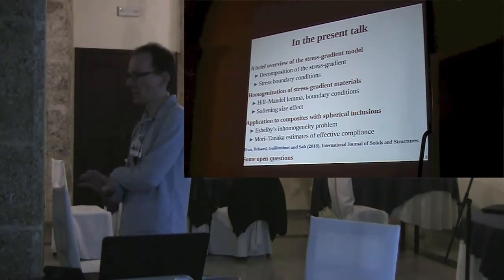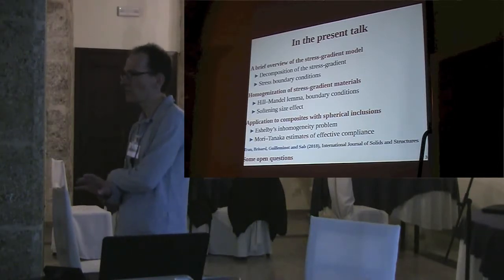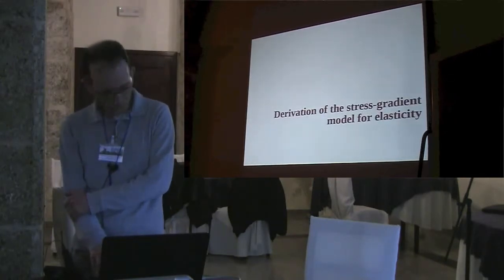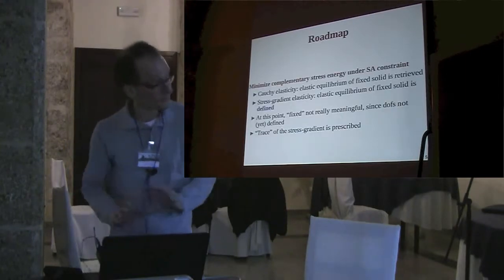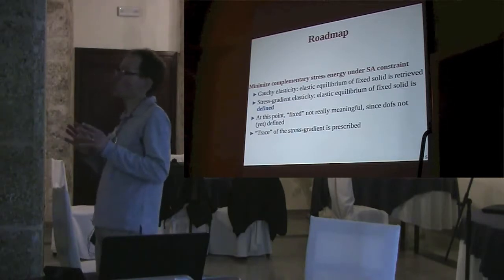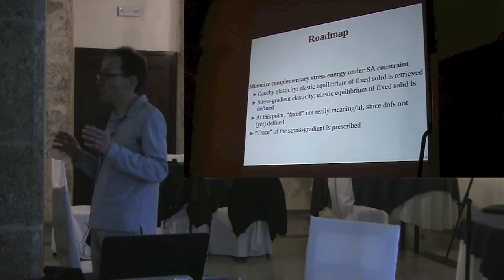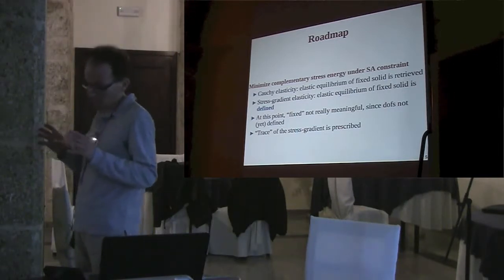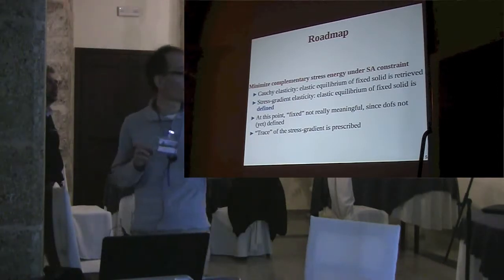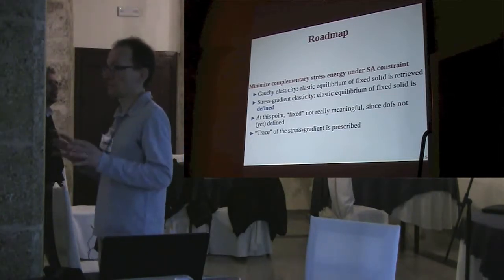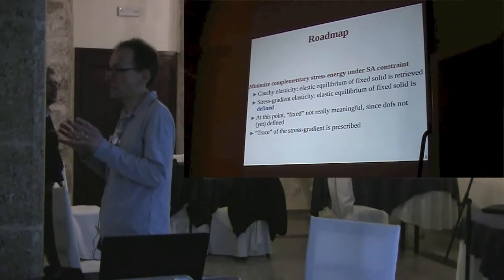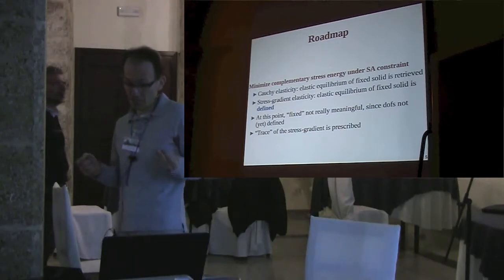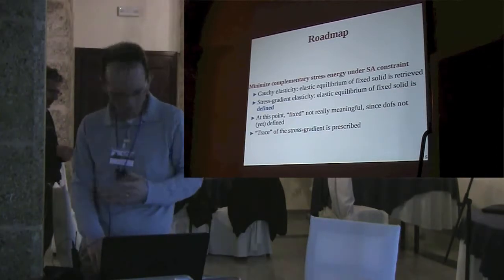The model is mathematically sound, but there are still a few questions regarding the physical meaning of some quantities. Let's move to the derivation of the stress gradient model for elasticity. Our goal is to find the boundary value problem that governs the equilibrium of stress gradient bodies, by minimizing the complementary stress energy. This defines a fixed stress gradient body, though at this point a fixed stress gradient body doesn't mean anything, since we haven't defined the kinematics.